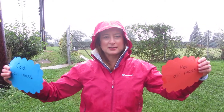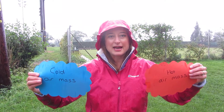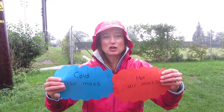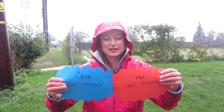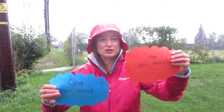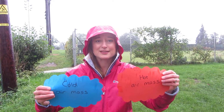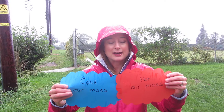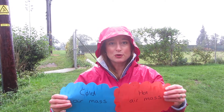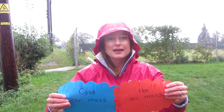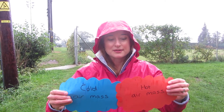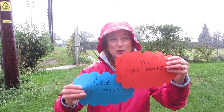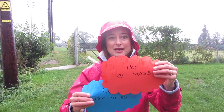The air masses travel along and they bump into each other over the top of the United Kingdom. If you imagine you've got this nice warm air mass that's full of water and it hits cold air — what does warm air always do? It rises. And so it begins to rise up over the top of the cold air mass.